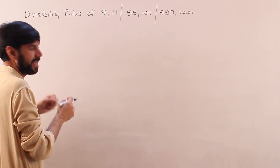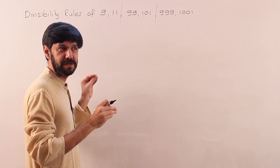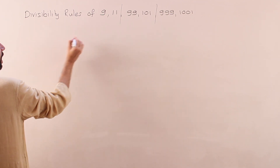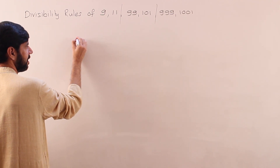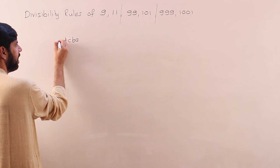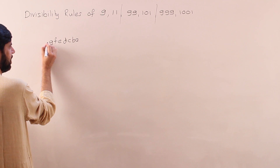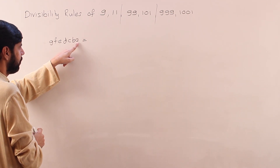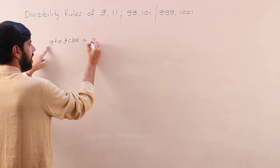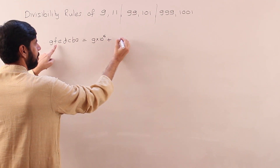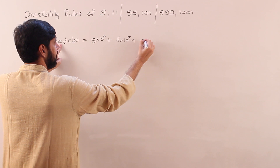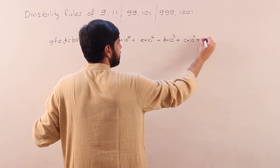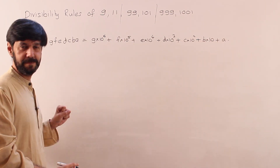Let me show where the divisibility rule of 9 comes from — again, a common man's proof, not a theoretical proof. If the number is written from the right end as digits a, b, c, d, e, f, g, I can write this number as: g × 10⁶ + f × 10⁵ + e × 10⁴ + d × 10³ + c × 10² + b × 10 + a.